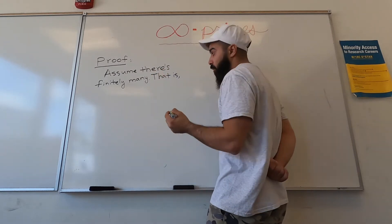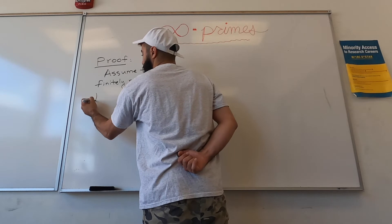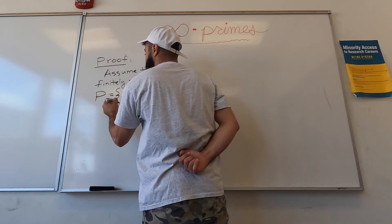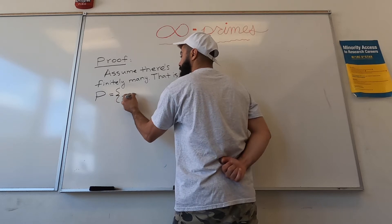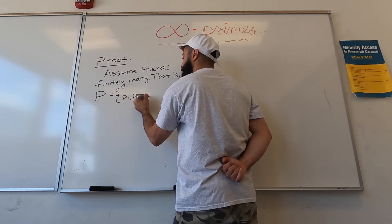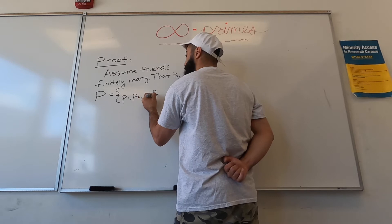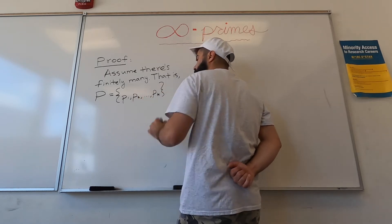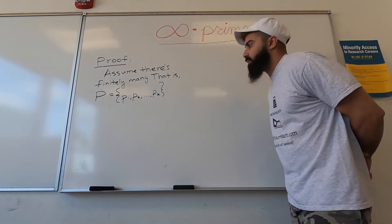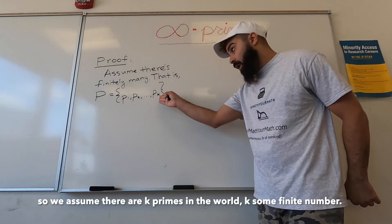That is, we have a list of all the primes in the whole wide world. Let's say P is the set of all the primes - big P - and then these little p1, p2, all the way to p sub k for some number k.